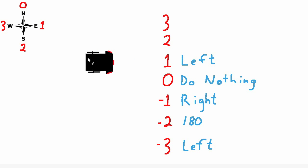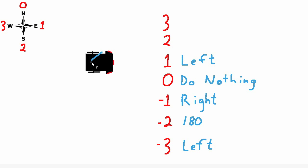If the find_best_neighbor function tells us to turn south, then we get one minus two, which is negative one, which means we should turn right — which makes sense in this instance. And finally, if the find_best_neighbor function tells us to turn west, we get one minus three, which is negative two, which equates to a 180 degree turn.